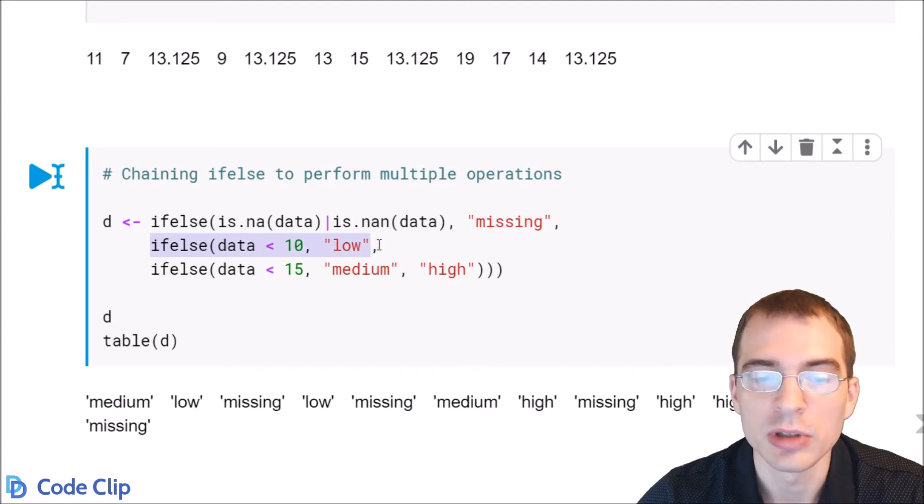If that's not true, we'll do another ifelse. If it's less than 15, we'll call it medium. And finally, if all of those aren't true, we'll call it high.